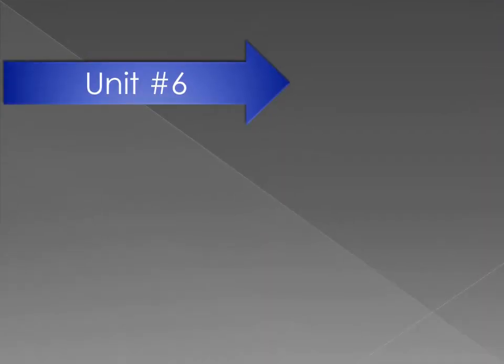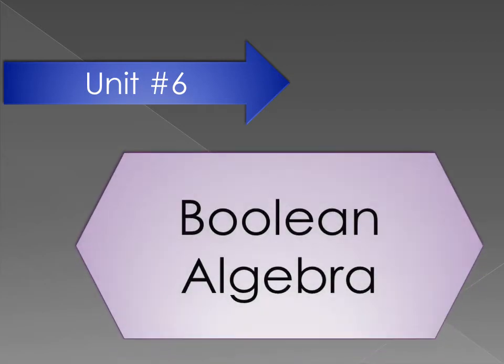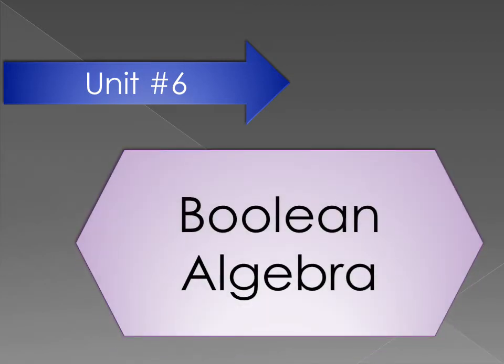We have started unit number 6 which is about boolean algebra. Boolean is a set with only two values — these values are true or false. In boolean algebra, only two variables are allowed: 0 and 1, where 0 represents the false statement and 1 represents the true statement. We can also use three operations in boolean algebra: addition, multiplication, and complementation.